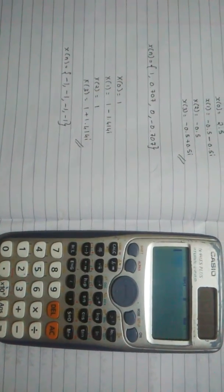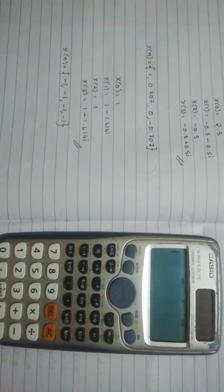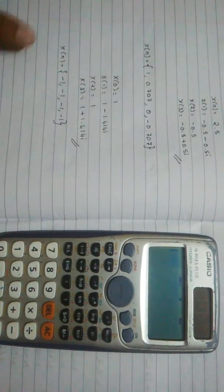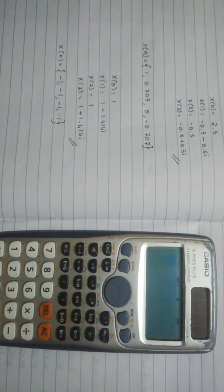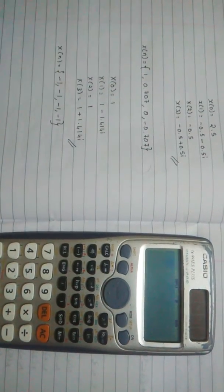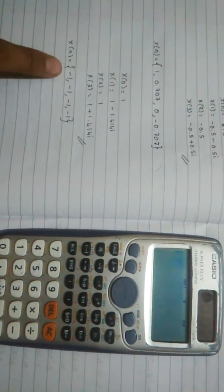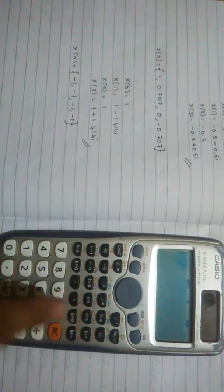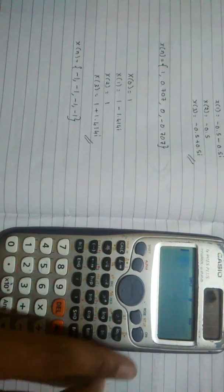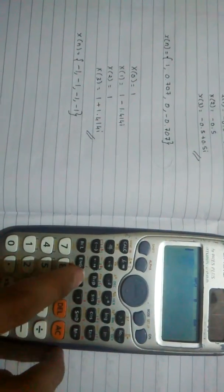So guys, in this video we are going to see how to calculate a four point DFT when negative numbers are given in the question. The question here for this video is minus 1, minus 1, minus 1, and minus 1.